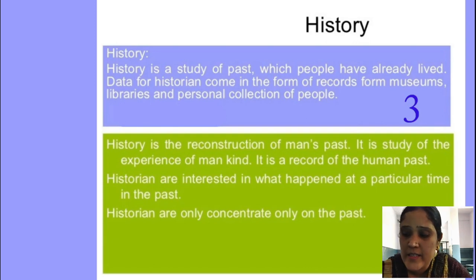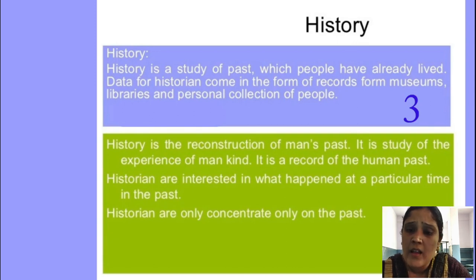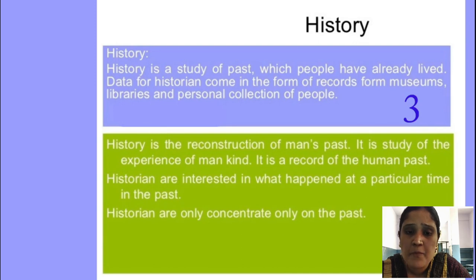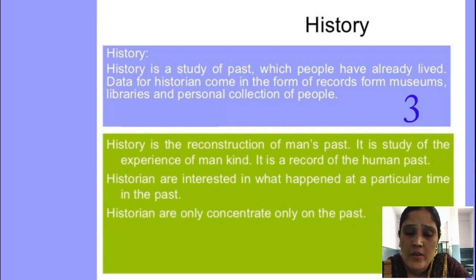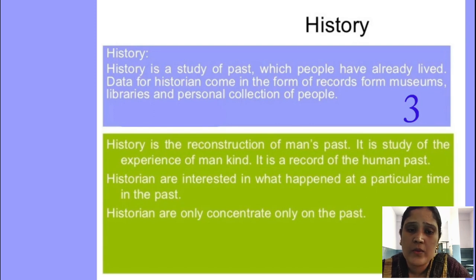Political science without history has no root. Without roots, a plant cannot grow, and if there is no plant, there are no fruits. That means political science and history are interrelated — without history, the present cannot be changed. These both are interconnected, and history provides the present society with the reconstruction of man from the past, showing what type of constructions should be taken into consideration in order to provide political rights to citizens.